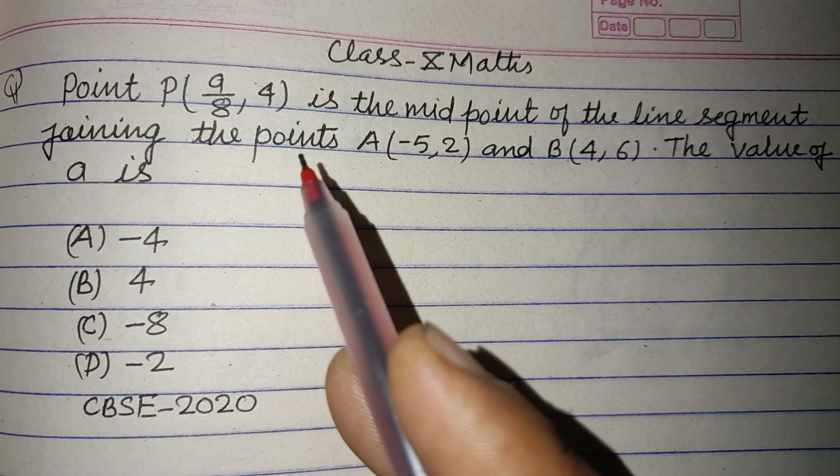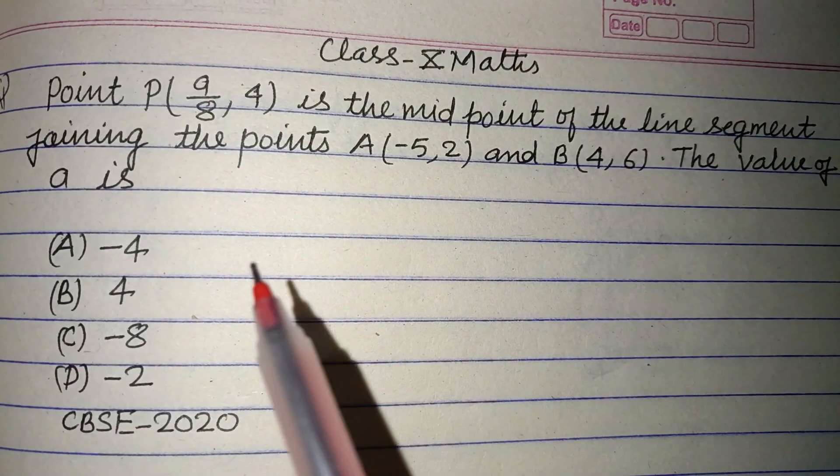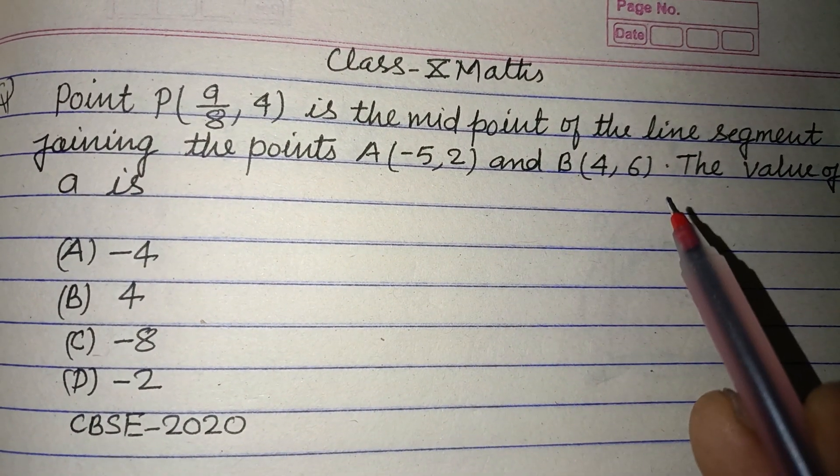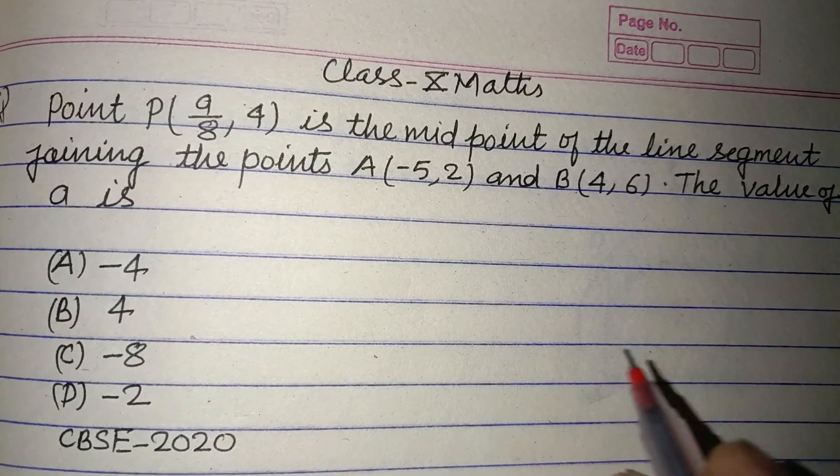Point P(a/8, 4) is the midpoint of the line segment joining the points A(-5, 2) and B(4, 6). The value of a is.